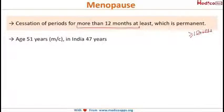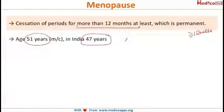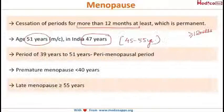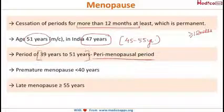The most common age group for menopause is around 51 years, and in India there is a trend of menopause at a lower age — 47 years. The range is from 45 to 55 years of age. The period from 39 to 51 years of age is considered the perimenopausal period.